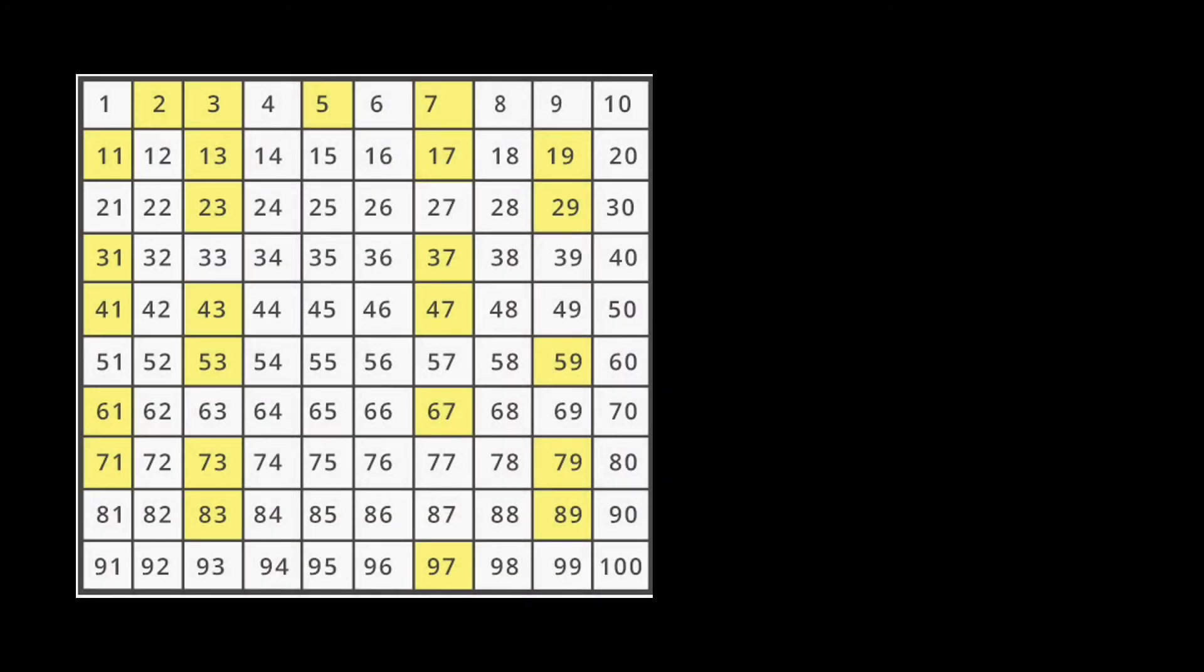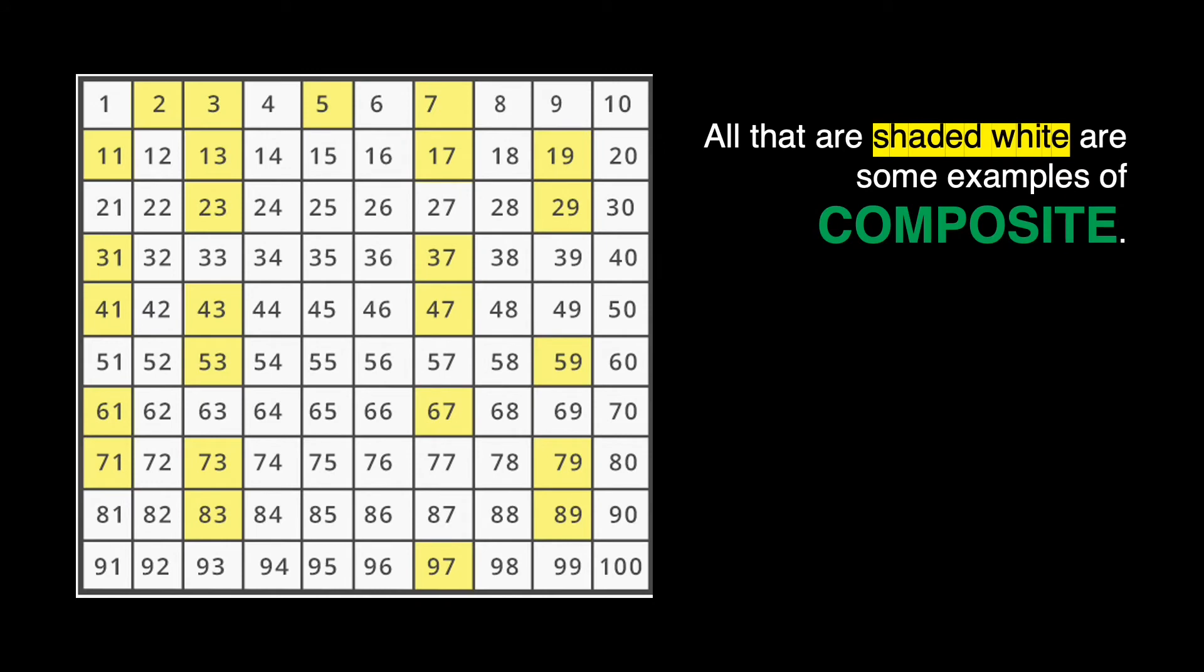Let's go back to this chart again. All that are shaded white are some examples of composite numbers. But can we consider 1 as a composite number because it is shaded white? I don't think so. I'll be waiting for your answer if it is really a composite or prime number.